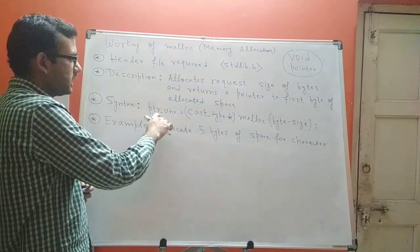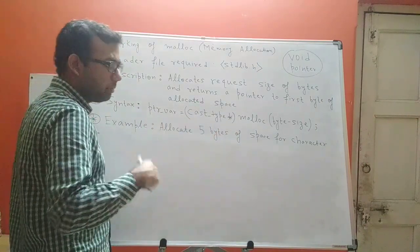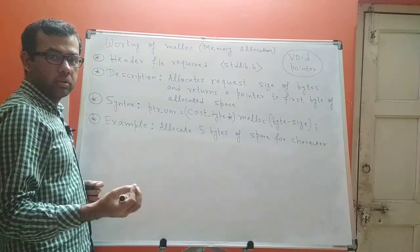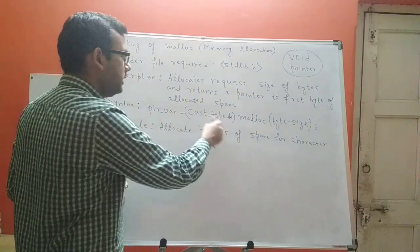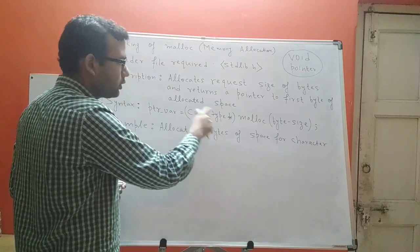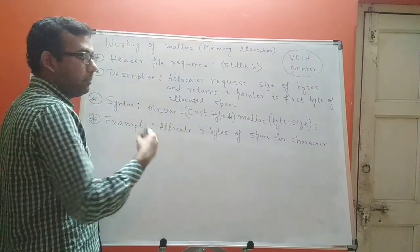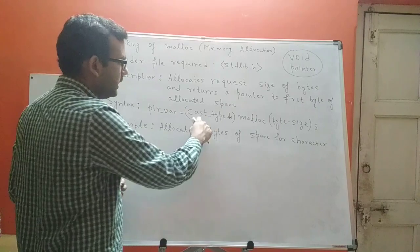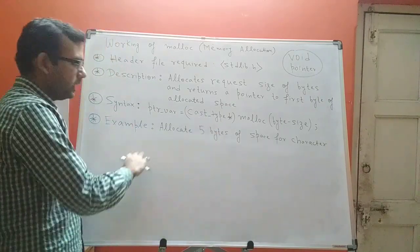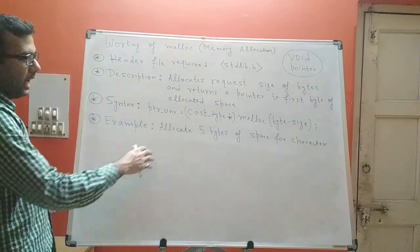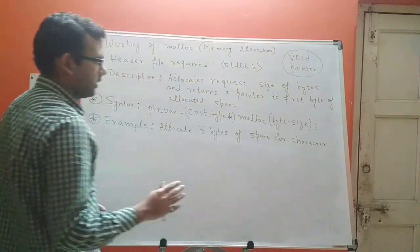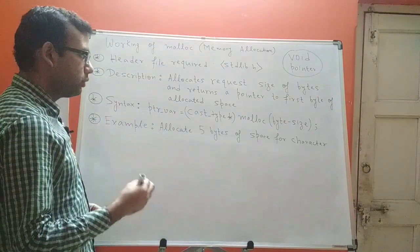That means if I'm planning to allocate memory to store an integer, then the cast type should be int star. If I'm planning to store a character, then the cast type should be char star, and so on. So let's take an example: let's say I want to allocate five bytes of space for a character.